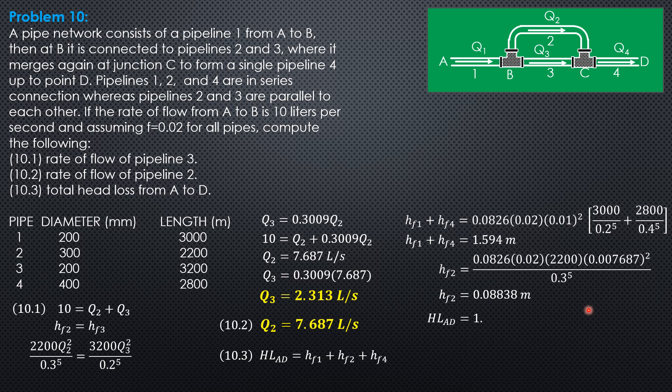Finally, total head loss from A to D is 1.594 plus 0.0838. So, the total head loss is 1.682 meters.